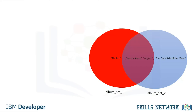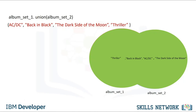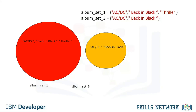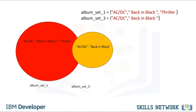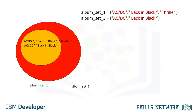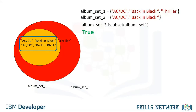The union of two sets is the new set containing all items in both sets. We can find the union of ALBUM_SET_1 and ALBUM_SET_2 — the result is a new set that has all elements of both. Consider ALBUM_SET_3, which contains ACDC and Back in Black. We can represent this with a Venn diagram, as all elements in ALBUM_SET_3 are in ALBUM_SET_1. We can check if a set is a subset using the issubset method — as ALBUM_SET_3 is a subset of ALBUM_SET_1, the result is true. Check out the lab for more examples.